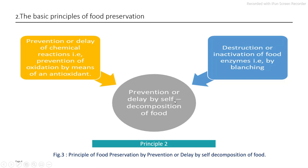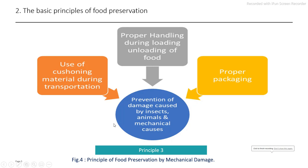The third principle of food preservation is prevention of damage caused by insects, animals, and mechanical causes — that is, mechanical stresses which occur during handling, transportation, and storage. In this method, food specifically requires after post-harvesting: proper packaging and proper storage in order to prevent damage by insects and rodents. Then second, proper handling during loading, unloading, during processing, packaging, distribution and storage. Use proper cushioning material during transportation in order to reduce physical stresses which damage the food surface and result in increasing the spoilage rate.